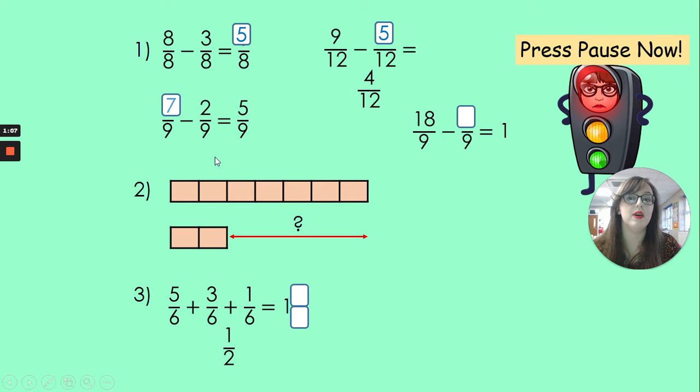Something take away 2 is 5, the answer is 7 because 2 out of 5 is 7. 18 take away something equals 1 whole. Now this one's a little bit tricky because we've got the extra step. We know that 1 whole is the same as 9 ninths. And to turn 18 into 9 ninths, we need to take away 9.